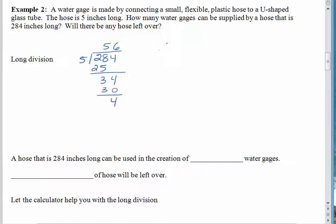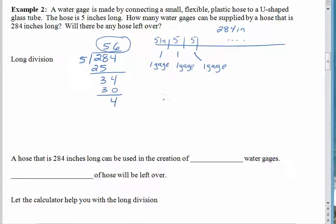Alright, so what does this exactly mean? Well, let's draw a picture of this. Here's our great big long hose. It was 284 inches long. And what we did was we chopped off this little 5 inch piece to make one water gauge. And then we chopped off another 5 inches, and then another 5 inches. And we kept on doing this all the way down. So this first little piece makes one gauge. And this next little piece makes one gauge. And the next piece makes one gauge. So by the time we've gotten done, the 56 talks about the number of gauges that we can create, or at least we can supply with this hose. So we can make 56 gauges.